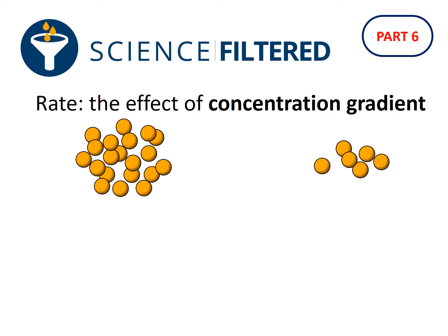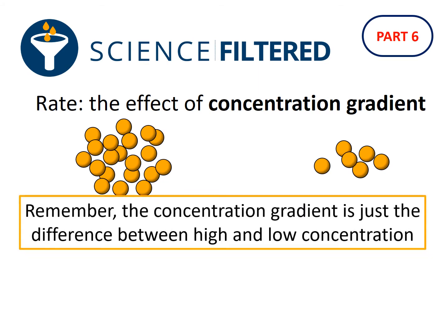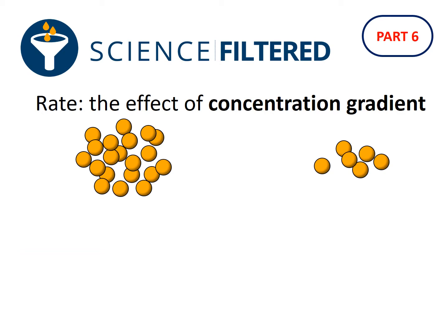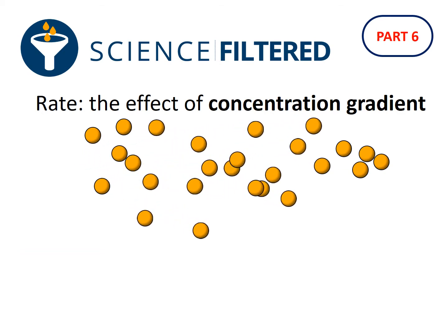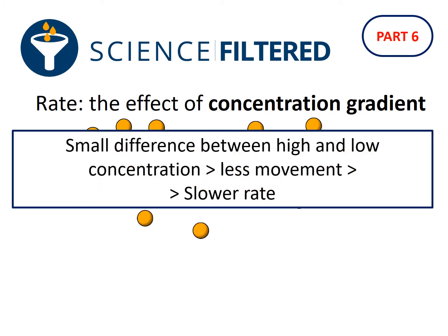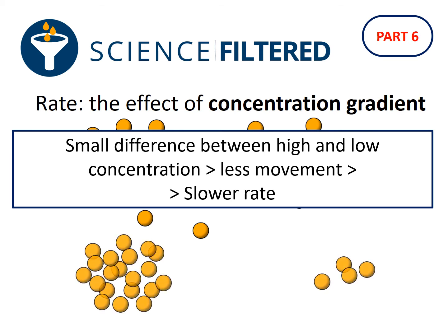What effect is the concentration gradient going to have on the rate of diffusion? The concentration gradient is just the difference between the high concentration and the low concentration. If there's a small difference between high and low, that means there's going to be less movement, so it's going to be a slower rate of diffusion.